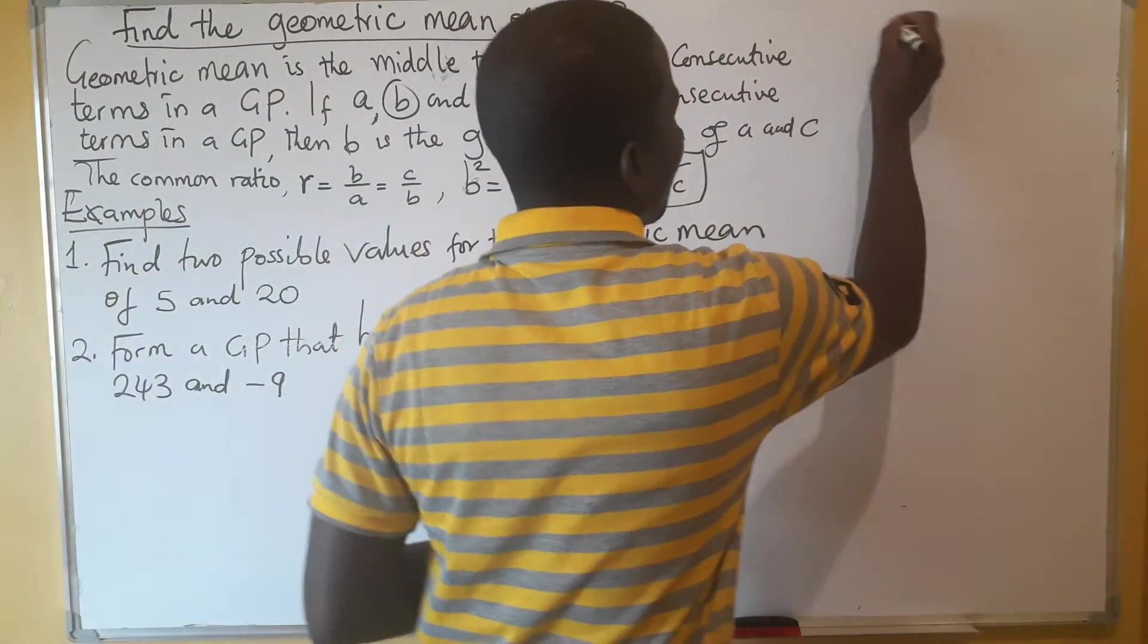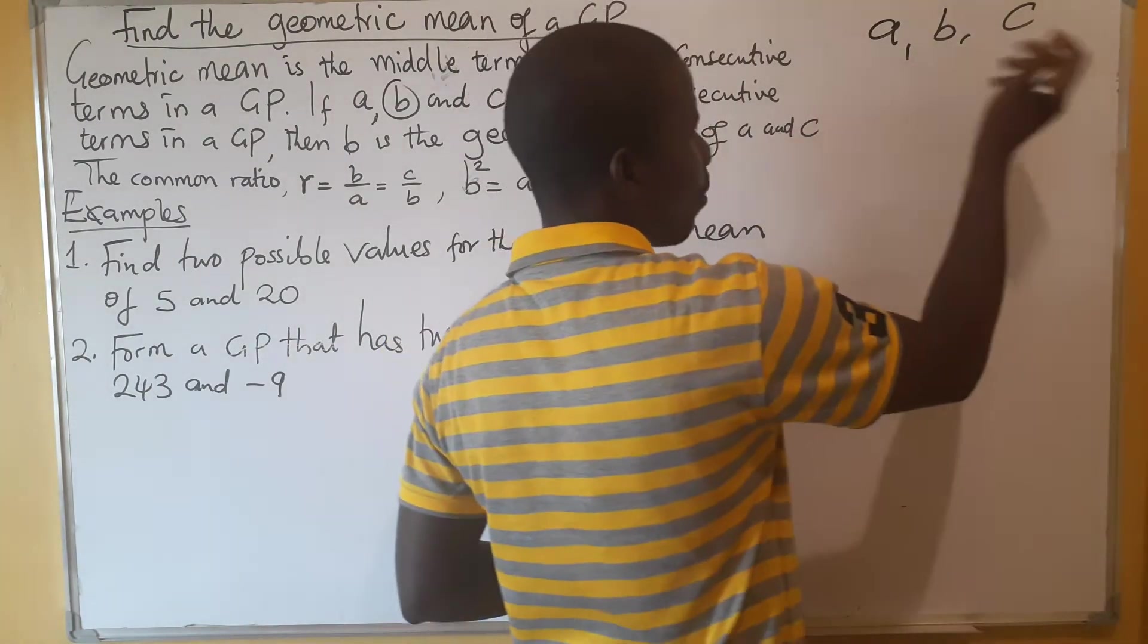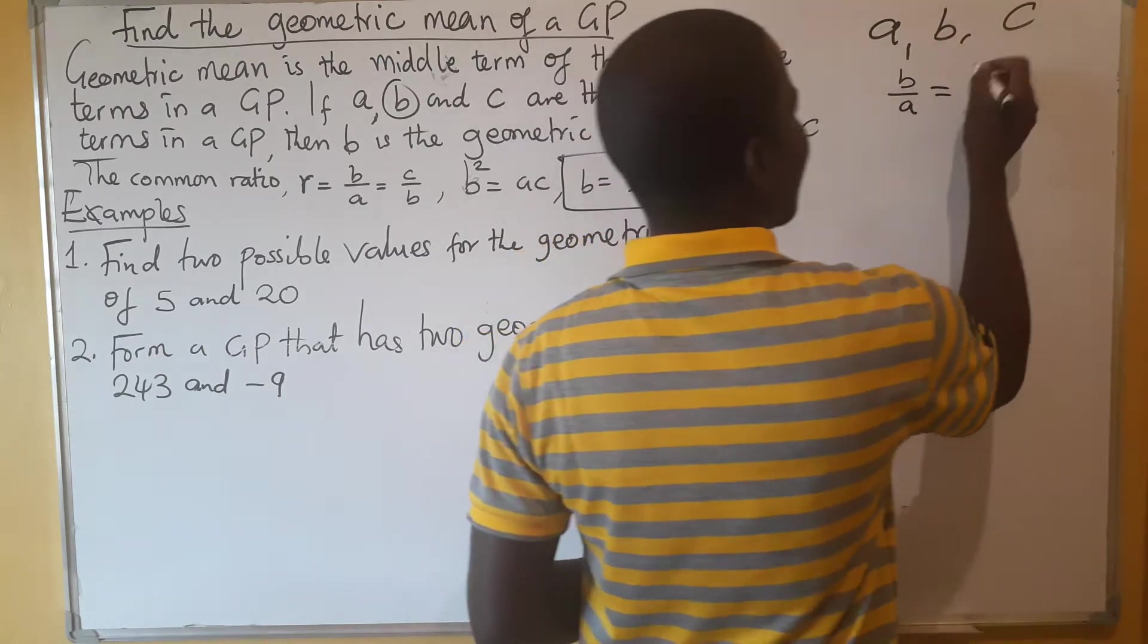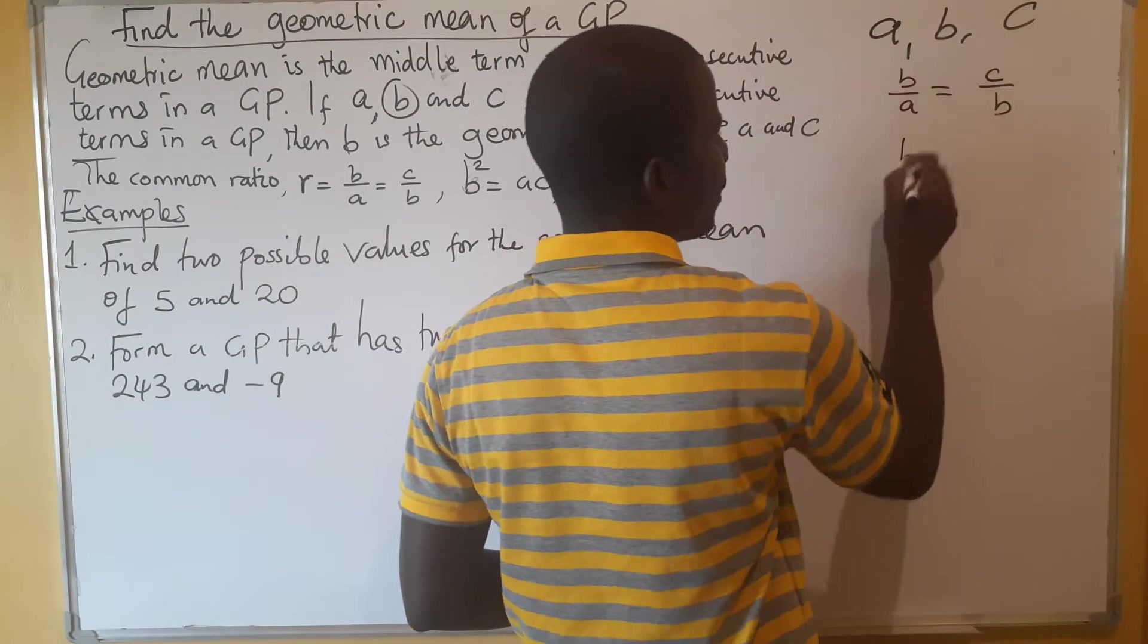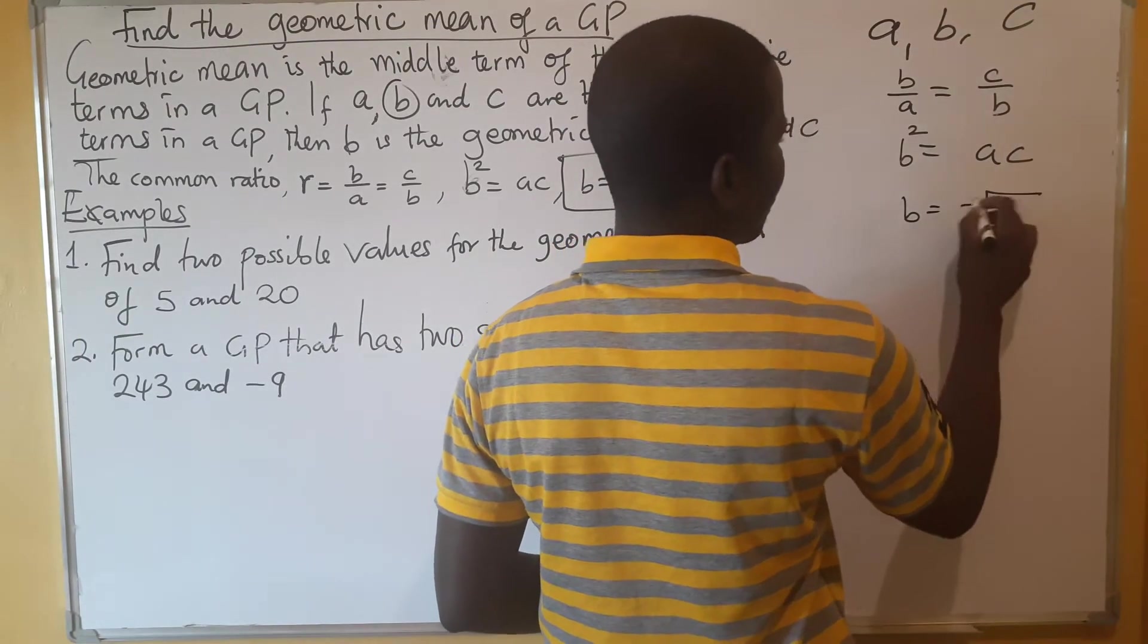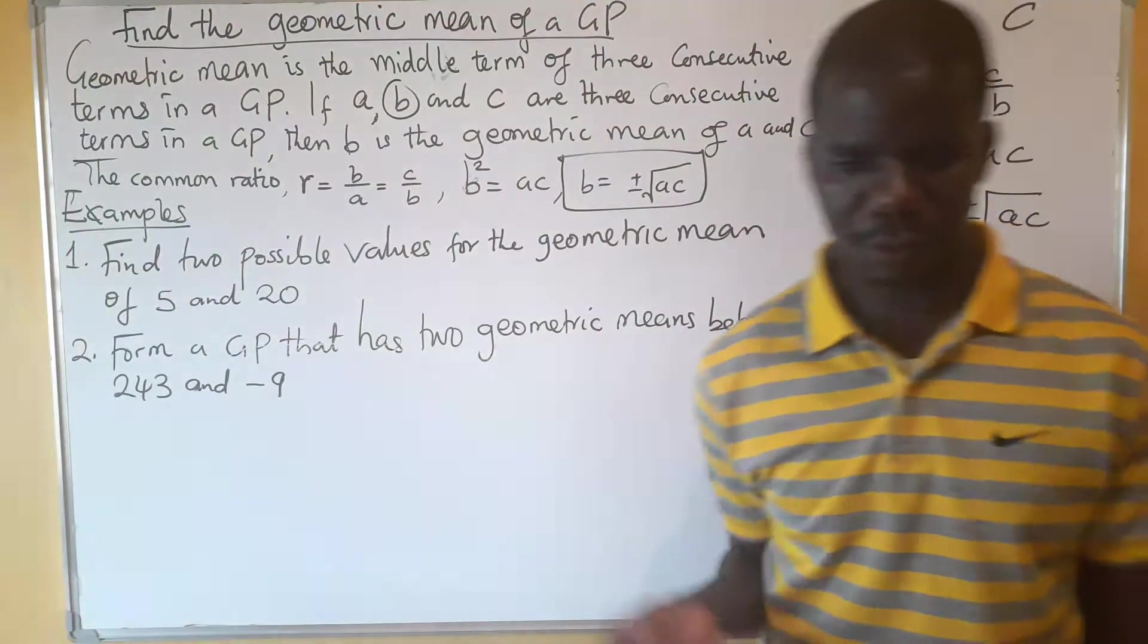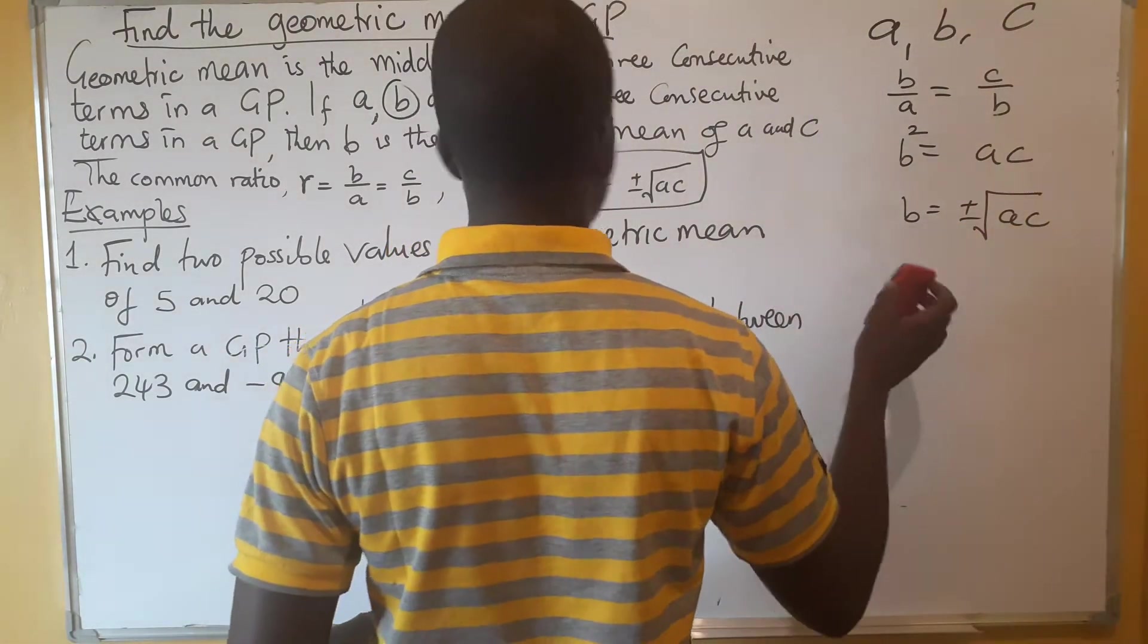What we are saying - you have got a, b, and c. And if you're looking at a GP, you know that to find a common ratio, we are saying we look at the second term divided by the first term, which should be equal to the third term divided by the second term. So if you want to solve for b here, it will be b squared equals ac, and b you take the root which is plus or minus square root of ac. That is where it's coming from, and this is the formula that we use to find the geometric mean.